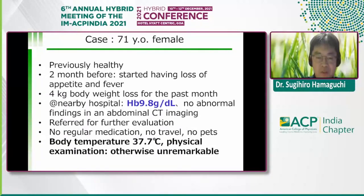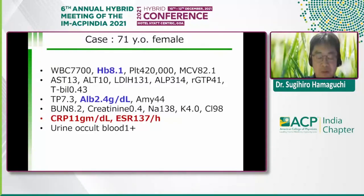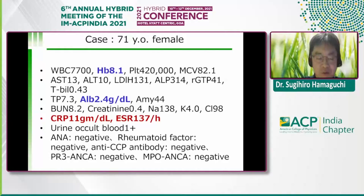Her body temperature was 37.7 degrees Celsius and the remainder of the physical examination was unremarkable. In laboratory studies, she had anemia with hemoglobin level of 8.1 grams per deciliter, hypoalbuminemia, and inflammatory markers such as CRP and erythrocyte sedimentation rate were very high. However, there were no autoimmune antibodies — ANA, rheumatoid factor, anti-cyclic citrullinated peptide antibody, PR3-ANCA, and MPO-ANCA were all negative.